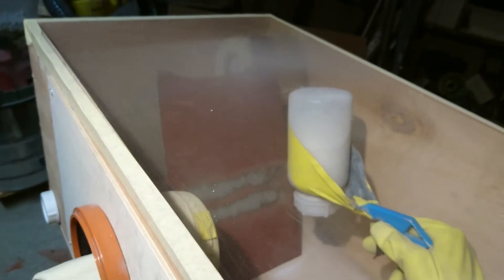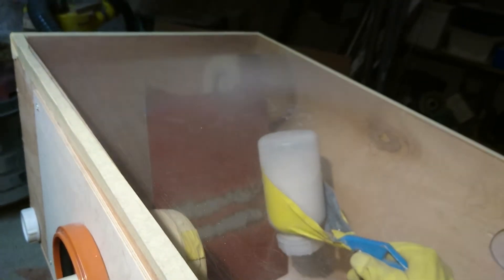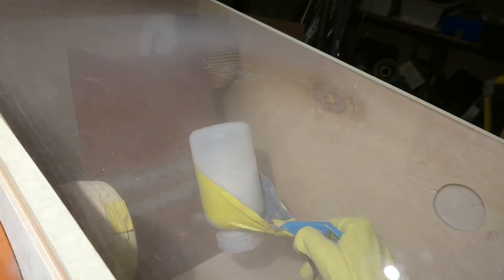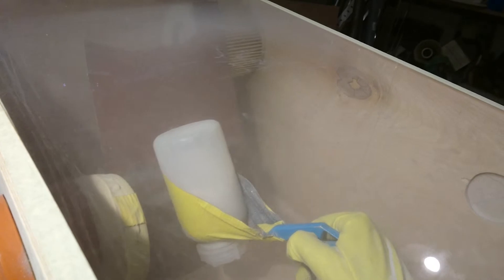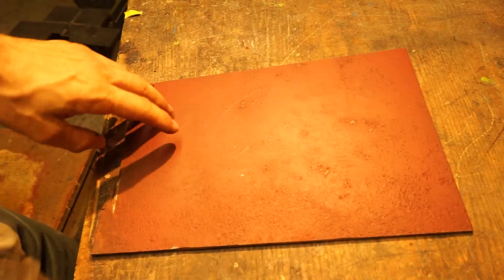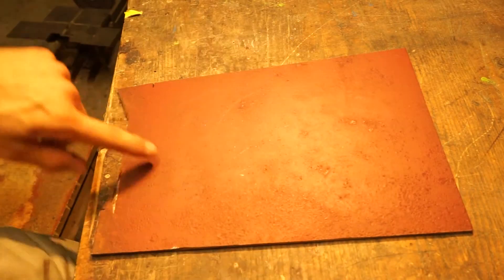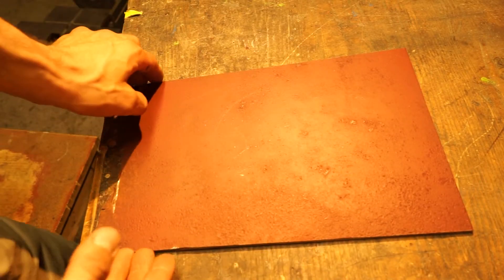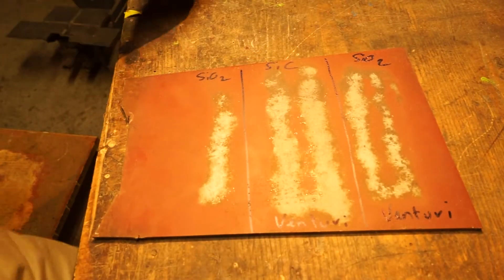So let's see how much of the rust and color we can clear off with the new nozzle and silica sand. To see the effect of the new nozzle, I coated this rusty panel with rust paint. And then I cleared off the paint again. Let's see how it works.